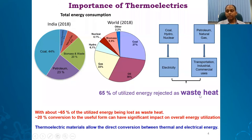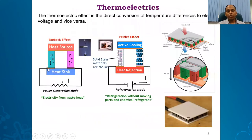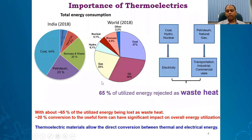We only use 35%, meaning we always waste 65 to 70% of energy as waste heat. Can we convert this waste heat to some useful form — that is, electricity? If we think of this waste heat end as the hot end of the Seebeck effect, and some lower or room temperature as the cold end, then with efficient P and N type semiconductors we can convert this waste heat to electricity. That is why research in thermoelectrics is extremely important, not only in India but globally.